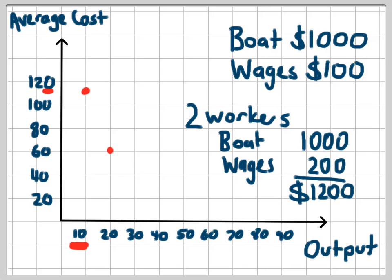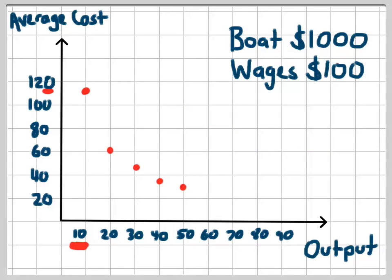We can see that the average cost is starting to fall as the business grows. As I move into three workers producing 30 fish worth of output, the total cost is $1,300. I divide that by the output of 30 and now I get my average cost falling to $43. This will continue on with the average cost of four workers falling to $35 and falling to $30 for five workers.